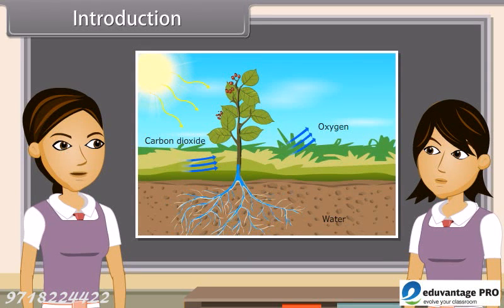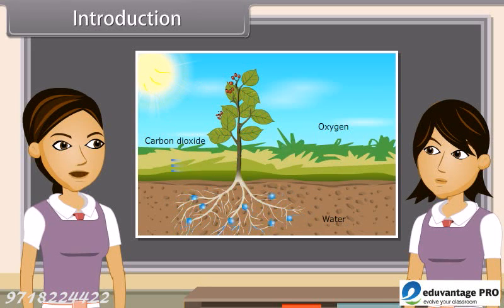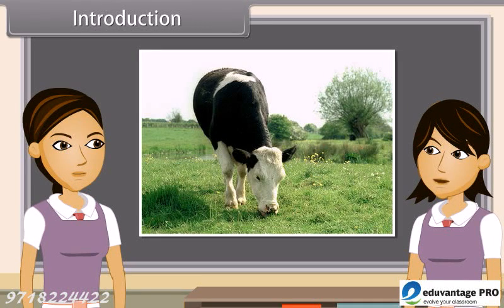Plants use the energy of the sun and prepare food by photosynthesis, which is utilized by them to maintain their life. In turn, these plants are also eaten up by herbivores and omnivores as food, and the carnivores eat herbivores as their food. In this way, we see that it is energy from the sun which provides food for plants and animals.